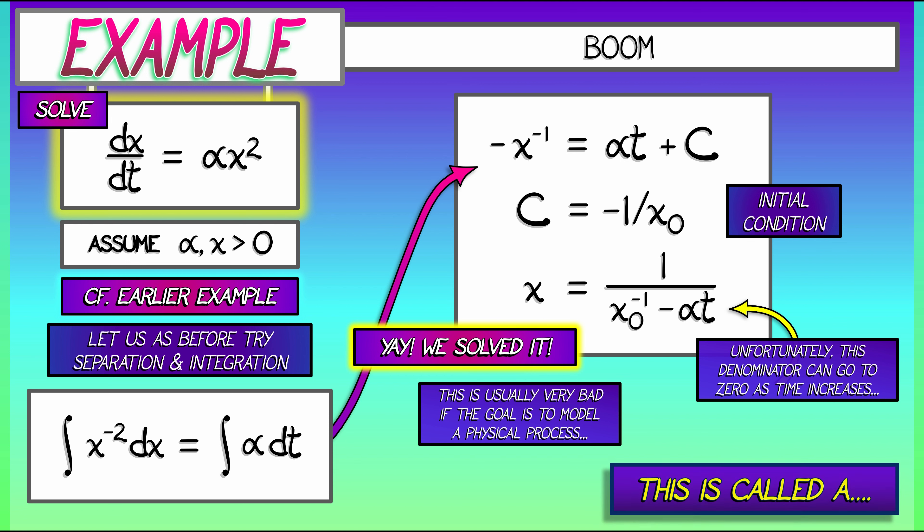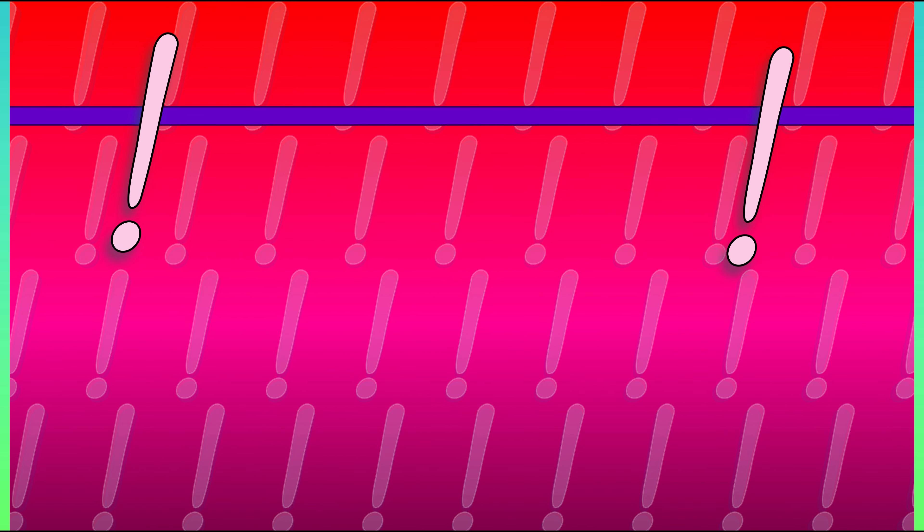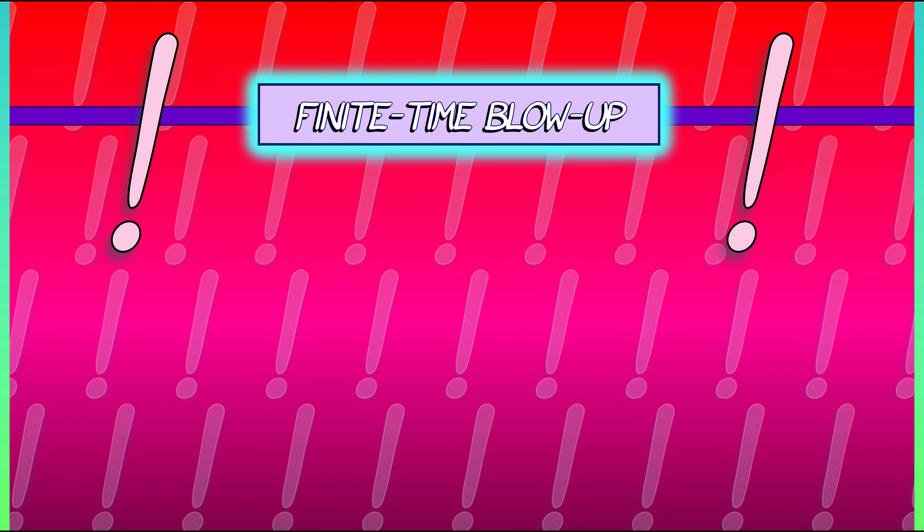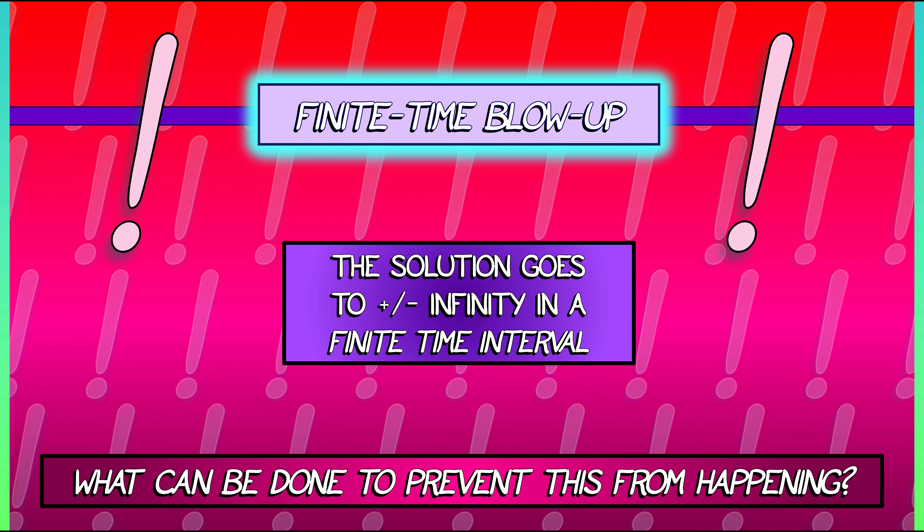If the goal of this differential equation was to model some physical process, I think we have left the realm of physicality, and our solution fails to exist. This failure is a very dangerous thing, and is called a finite time blow-up, as in, that's it. That solution went to infinity. More importantly, it goes to infinity in a finite time interval, and the solution fails to exist past that singularity. Now, as stated, this is a bad thing. What can we do to prevent this from happening? Are there general conditions under which this does not occur?